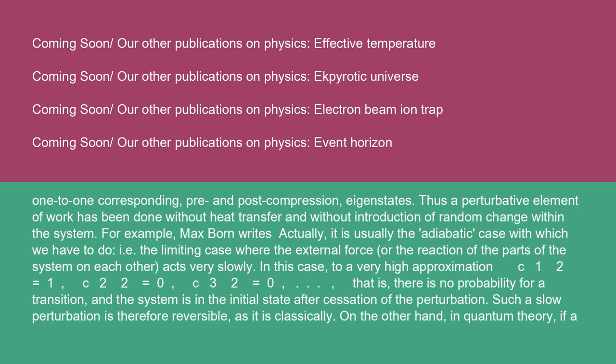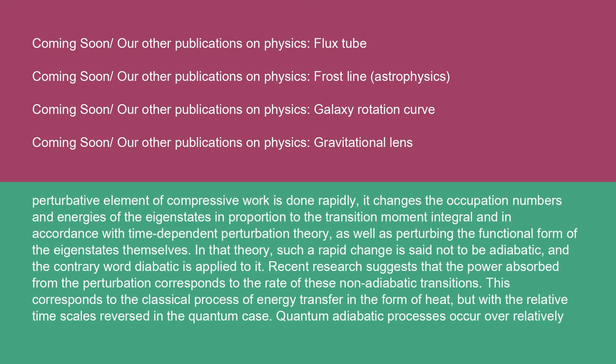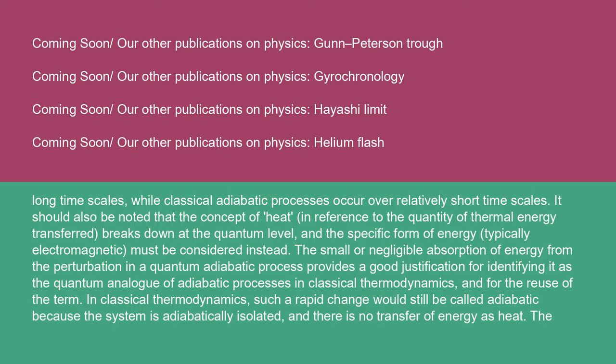On the other hand, in quantum theory, if a perturbative element of compressive work is done rapidly, it changes the occupation numbers and energies of the eigenstates in proportion to the transition moment integral and in accordance with time-dependent perturbation theory, as well as perturbing the functional form of the eigenstates themselves. In that theory, such a rapid change is said not to be adiabatic, and the contrary word 'diabatic' is applied to it. Recent research suggests that the power absorbed from the perturbation corresponds to the rate of these non-adiabatic transitions, corresponding to the classical process of energy transfer in the form of heat — but with the relative time scales reversed in the quantum case. It should also be noted that the concept of heat breaks down at the quantum level and the specific form of energy, typically electromagnetic, must be considered instead.